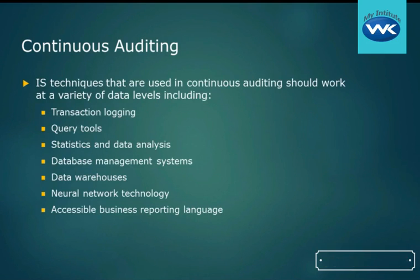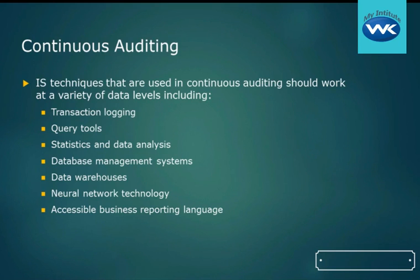IS techniques used in continuous auditing should work at a variety of data levels, which could include transaction logging — where a series of events must happen 100% or they are all rolled back, which is a typical database function. Other areas include query tools, statistical and data analysis, database management systems, data warehouses, neural network technology, and accessible business reporting languages — these are all areas where you might consider using continuous auditing.